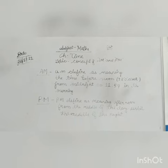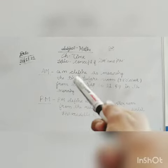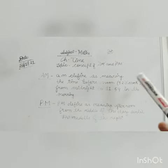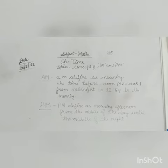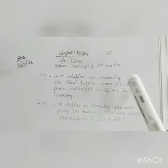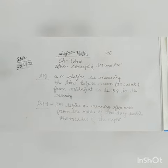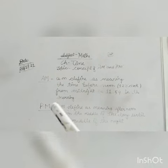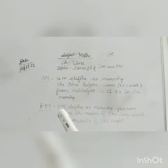So the first concept is AM. AM is defined as the time before noon. Time before noon means afternoon aapka 12 o'clock ke baad hota hai. That means 11:59 tak aapka AM chalta hai, in the morning. So from midnight to 11:59 in the morning.